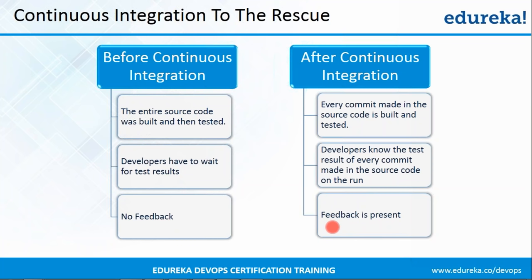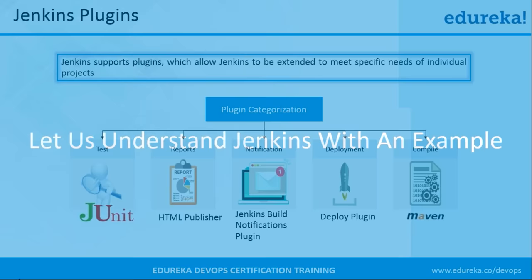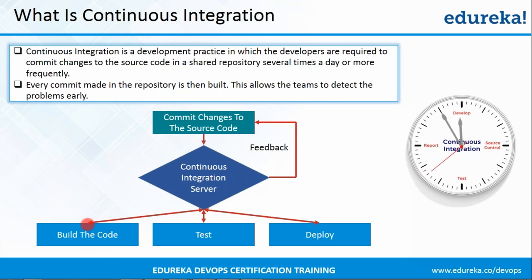Now let us see what exactly is continuous integration. In the continuous integration process, developers are required to make frequent commits to the source code. Because of that, any change made in the source code will be pulled by the continuous integration server and then that code will be built or compiled. Depending on the CI tool or the need of your organization, it will also be deployed onto the test server for testing, and once testing is done it will also be deployed onto the production server for release. Developers are continuously getting feedback about their application on the run.